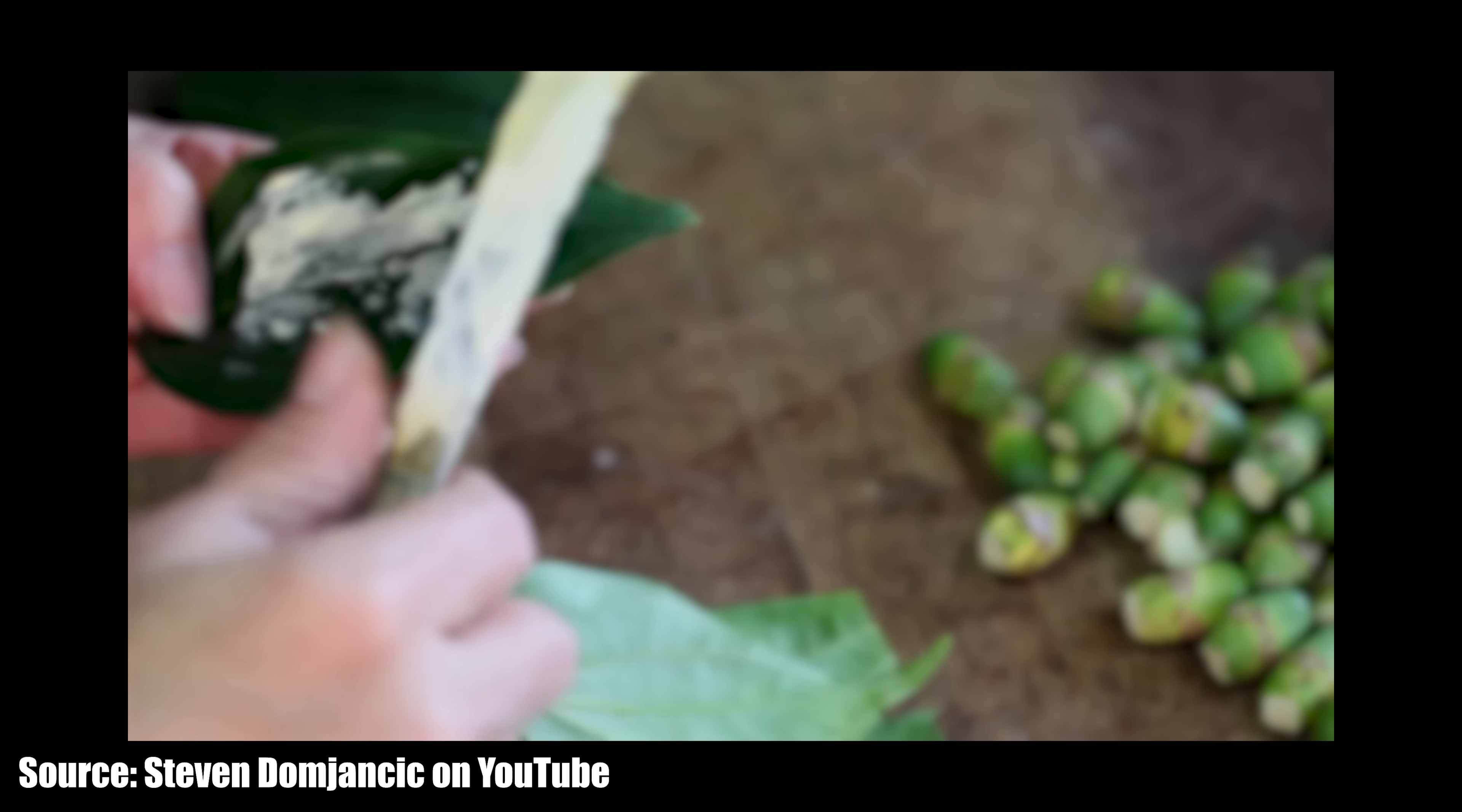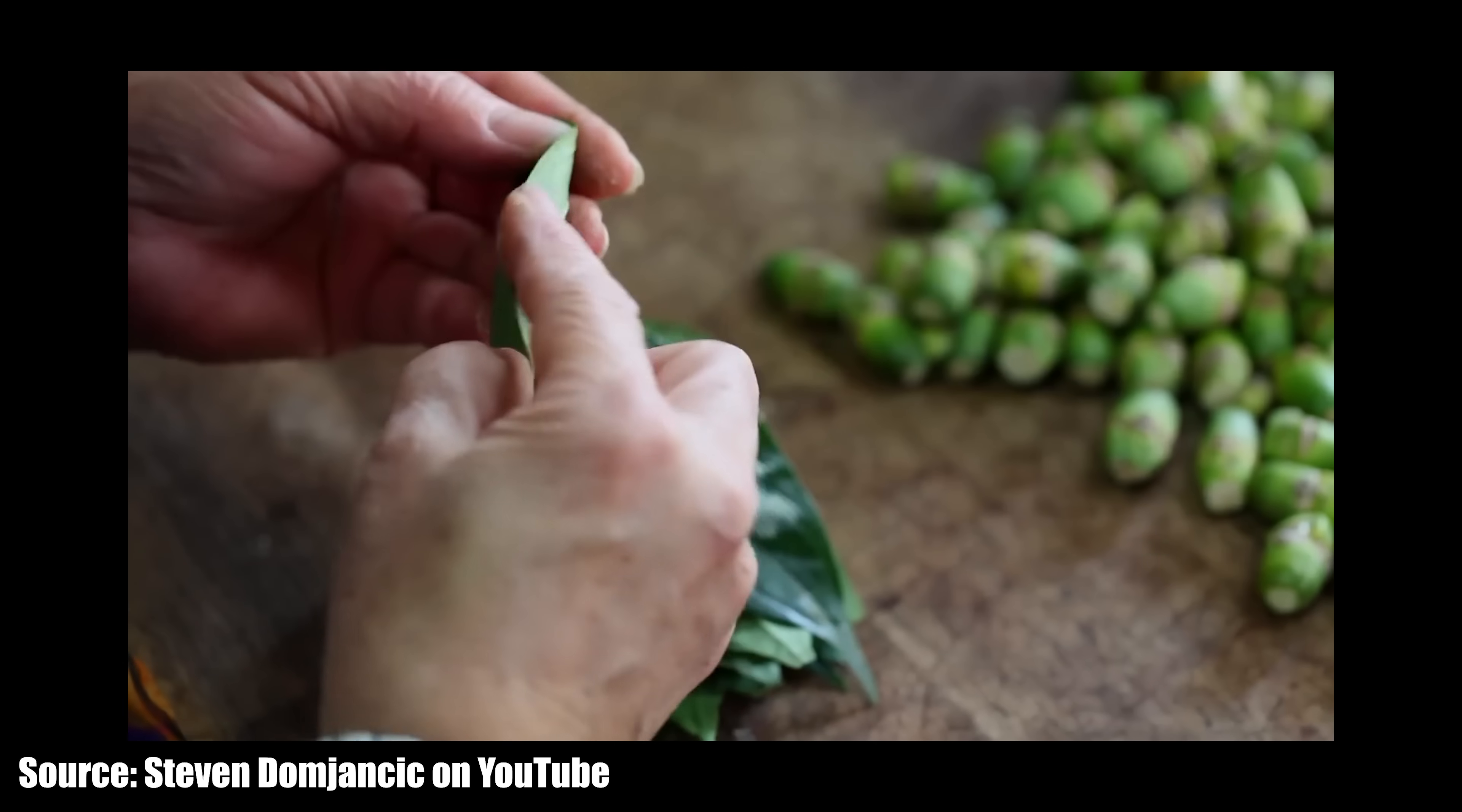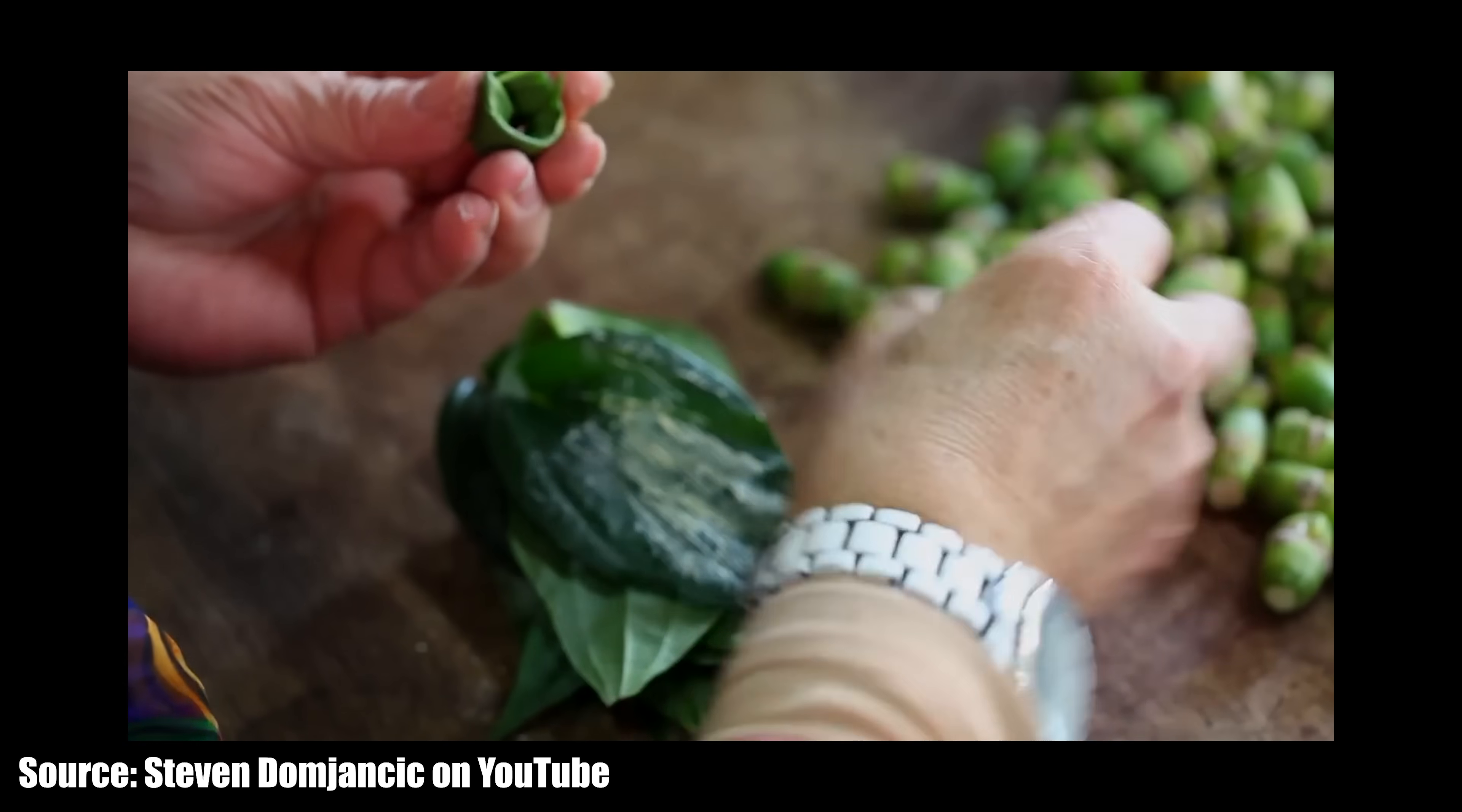The betel nut is the seed of the areca palm and it's a small oval-shaped nut that is typically chewed for its stimulant effects. The betel nut is often wrapped in a betel leaf along with slaked lime and sometimes tobacco, and this creates a preparation known as pan or betel quid.